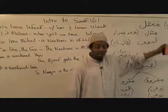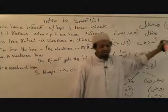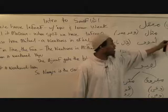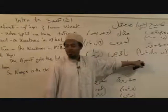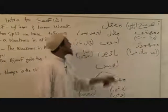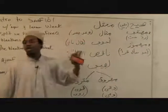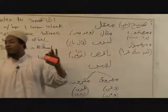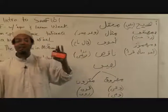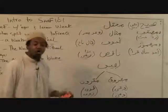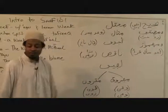The sahih means it's sahih salim, then we have the mu'da'af, and then we have the mahamuz. Now we're dealing with mu'tal — weak verbs, weak af'al. Mu'tal, you can say that for four different types of af'al. And the fourth one, lafif, has two different types of it.